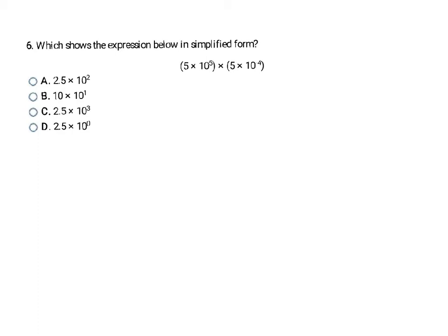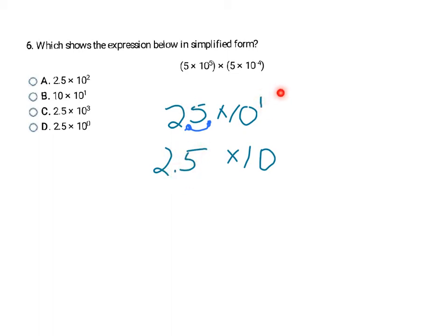Here's another multiplication problem with two numbers in scientific notation. I multiply the coefficients: 5 times 5 is 25. Then I add the exponents: 5 plus negative 4 is 1. So I have 25 times 10 to the 1st. Since 25 is bigger than 10, I move the decimal one place to get 2.5, which is between 1 and 10. Because I made the number smaller, the power gets bigger by 1, giving 2.5 times 10 to the 2nd — final answer A.